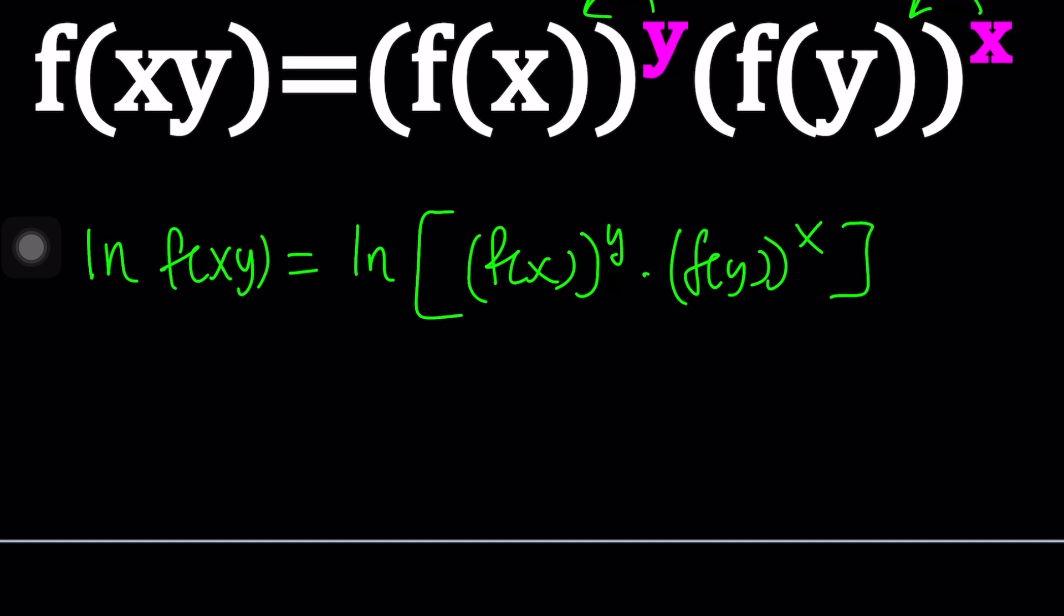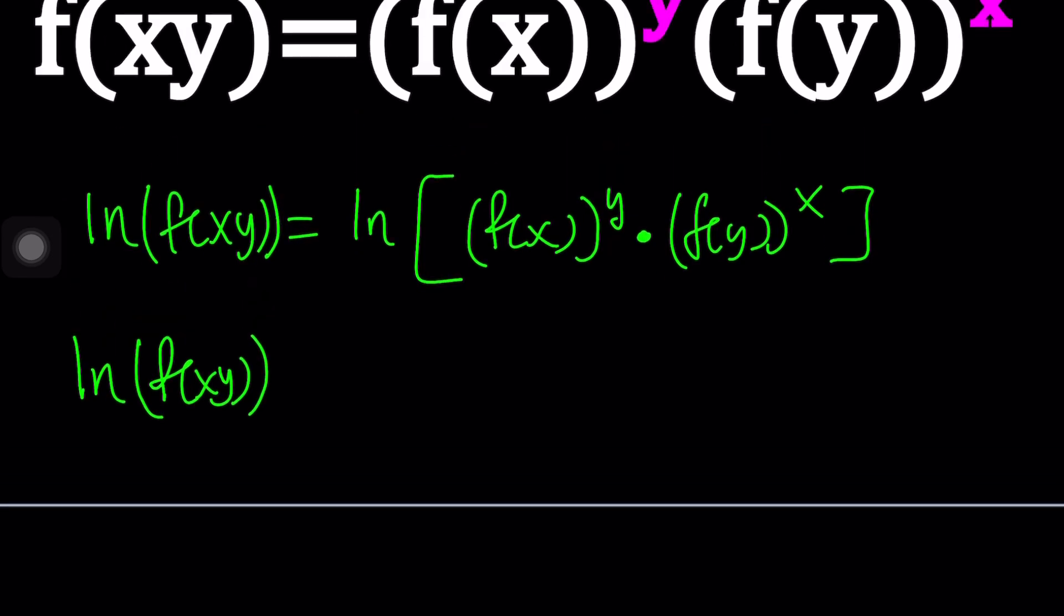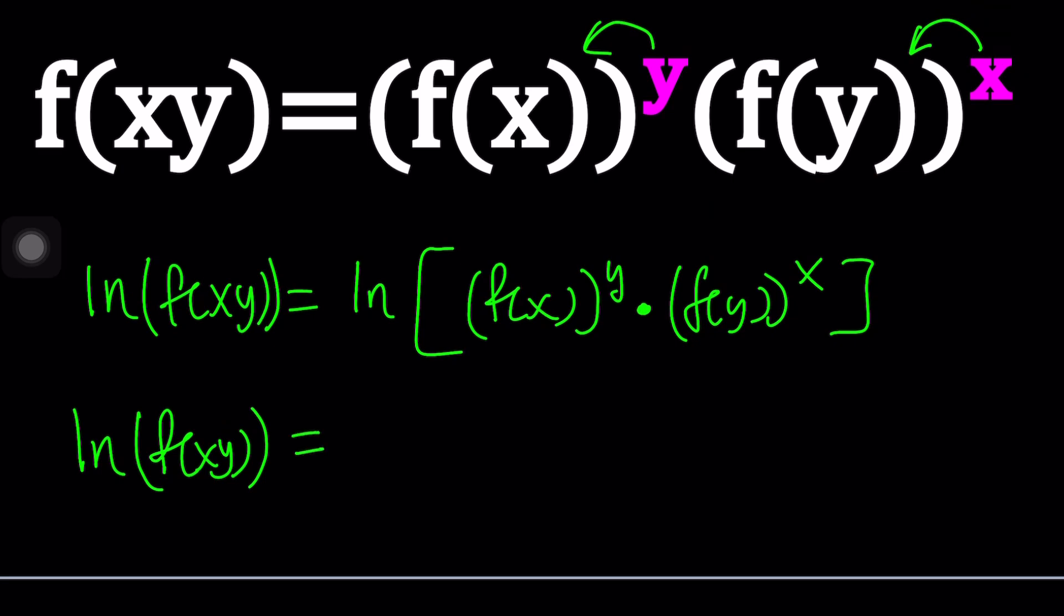Now, when you log or ln a product, it's going to turn into a sum, right? So we can write this as ln f of x. I don't think I need to write this in parentheses, do I? I mean, it's probably understood. But anyways, let me just use the parentheses. And then from here, we're going to be able to distribute it and write this as ln f of x to the power y plus ln f of y to the power x.